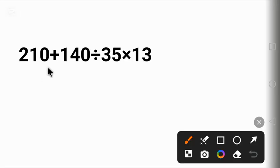The common mistake people make here is that they begin working from the left and solve addition first. 210 plus 140 will give us 350, divided by 35 times 13. 350 divided by 35 will give us 10 times 13. 10 times 13 will give us 130.